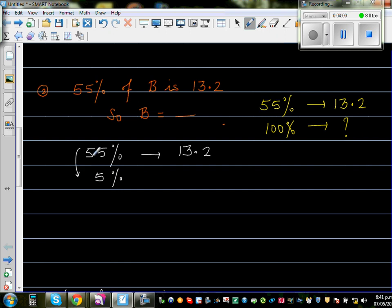From 55% if you want to find 5%, 55% you have to divide by something. So 55 divided by what gives you 5. Well, 55 have to divide by 11. 55 divided by 11 gives you 5. So you do the same thing for this number. 13.2 divided by 11.